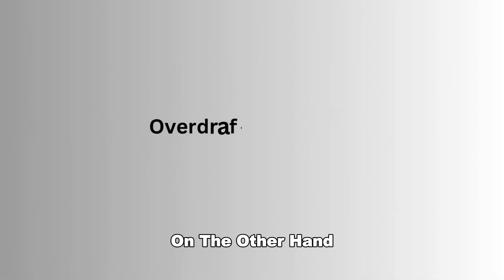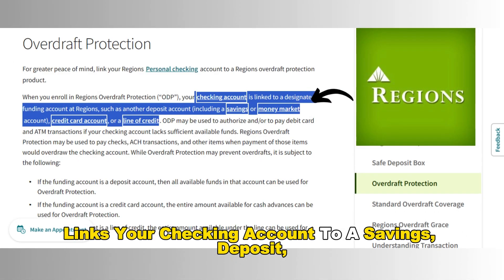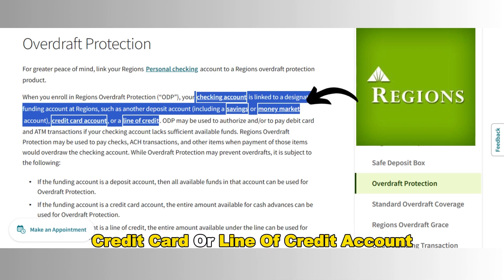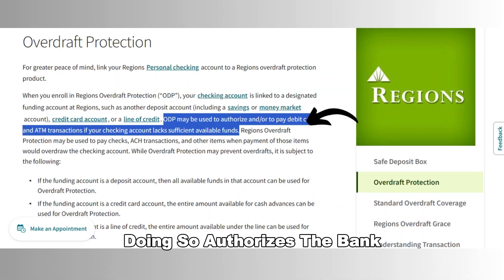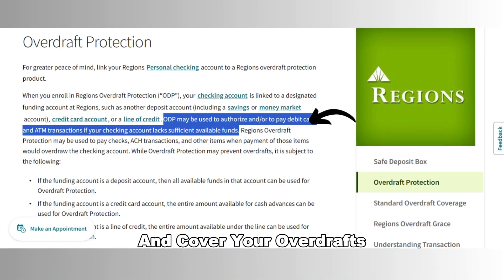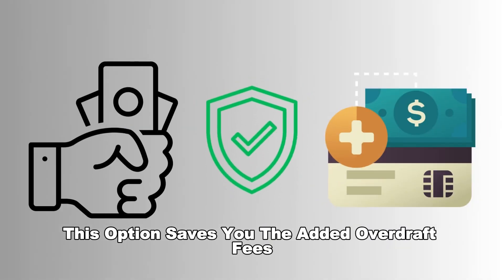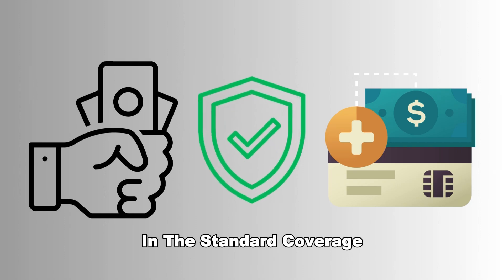On the other hand, the Regions Overdraft Protection Service links your checking account to a savings, deposit, credit card, or line of credit account. Doing so authorizes the bank to withdraw funds from these accounts and cover your overdrafts. This option saves you the added overdraft fees in the standard coverage.